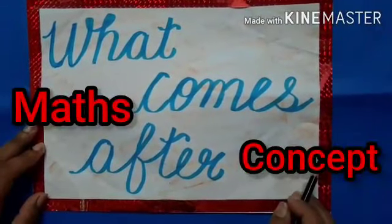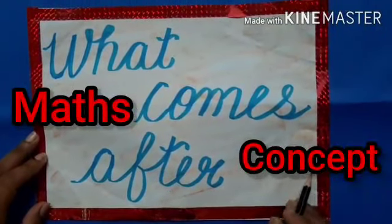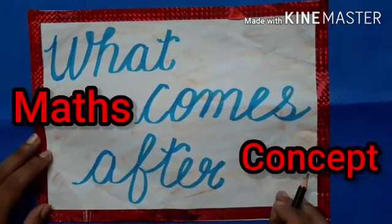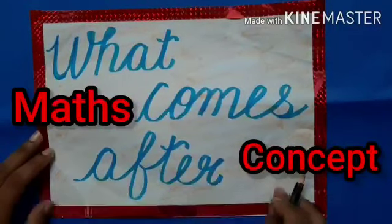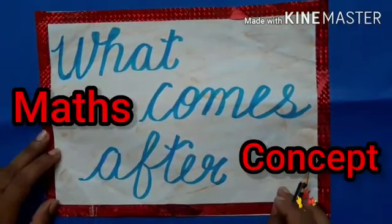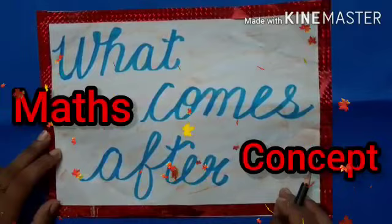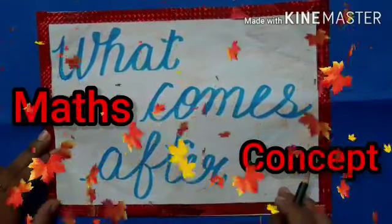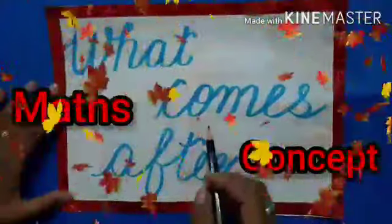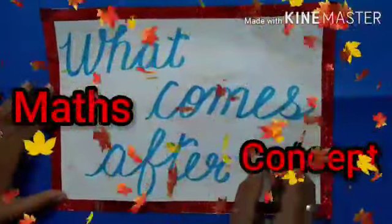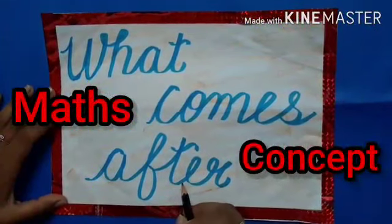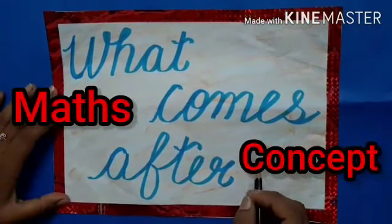Good morning students. In today's video, I am going to explain the concept of what comes after. I hope everybody is aware of forward counting — in simple language, forward counting means the next number. Before starting our topic of what comes after, let's recap counting from 1 to 50.